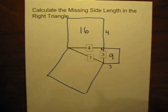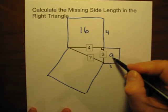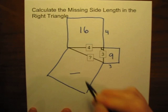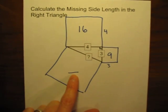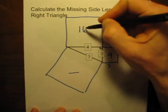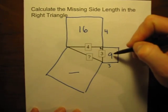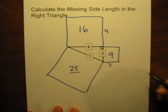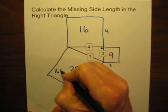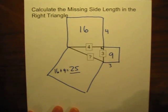The Pythagorean Theorem now says that the area of this square plus the area of this square must equal the area of this square. So 16 plus 9 equals 25.